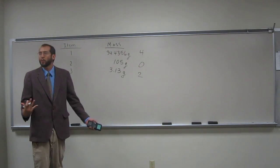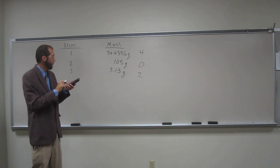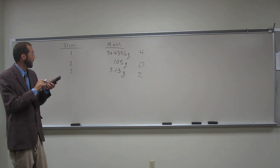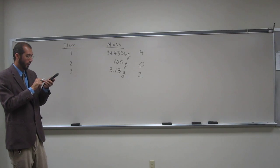Okay, so, how many would you go after the decimal point? Zero. Zero. Okay, so let's add these things up. 34.4356 plus 105 plus 3.13.